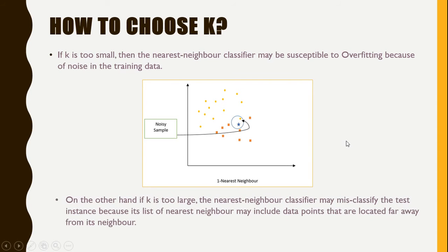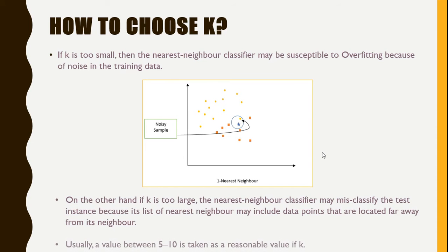On the other hand, if K is too large, the nearest neighbor classifier may misclassify the test instance because its list of nearest neighbors may include data points that are located far away. Usually, a value between 5 to 10 is taken as a reasonable value of K.